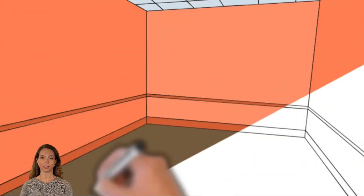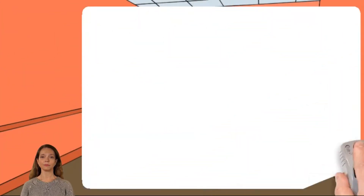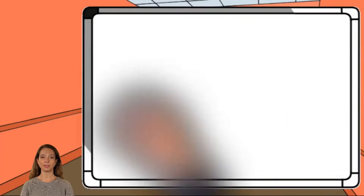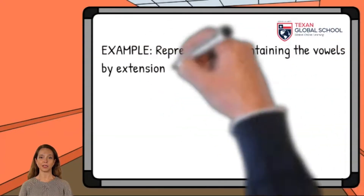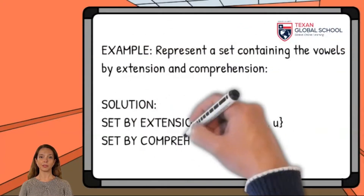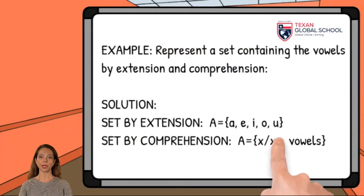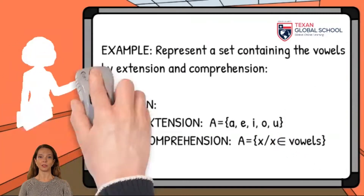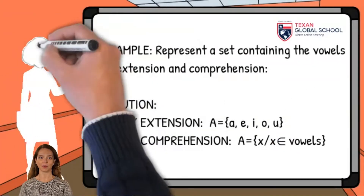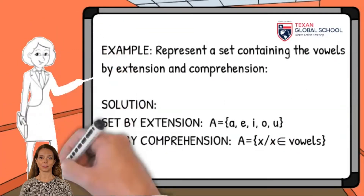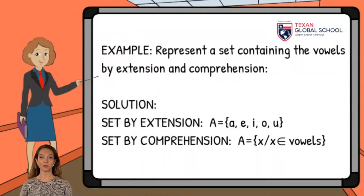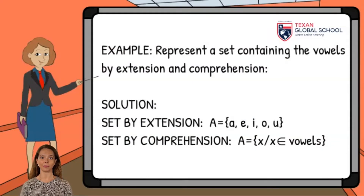Let's look at the following example: Express the set that represents the vowels by extension and comprehension. As we know, the set by extension contains all the elements. Therefore, the set of vowels A includes the elements A, E, I, O, U.